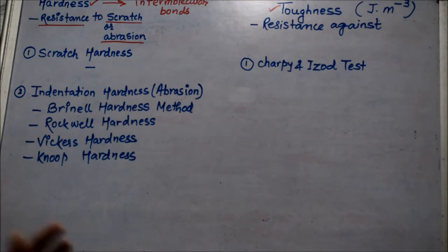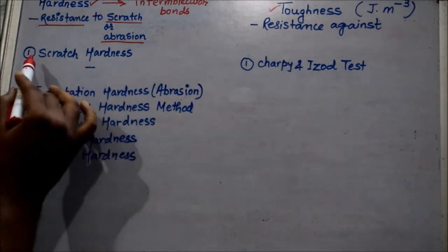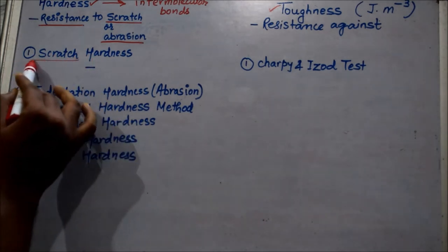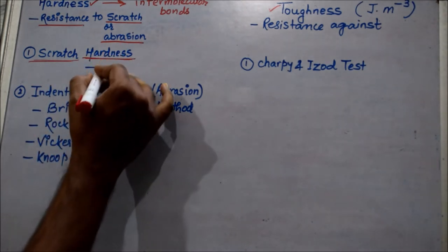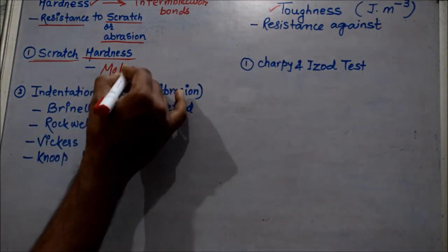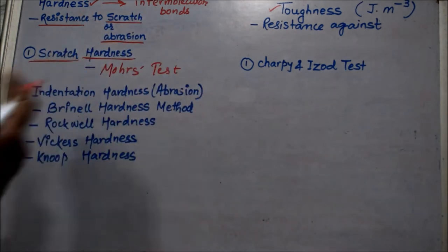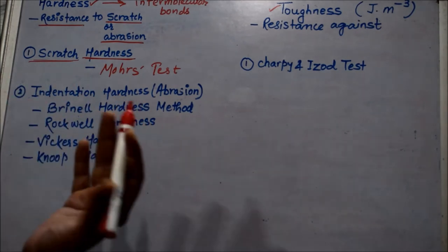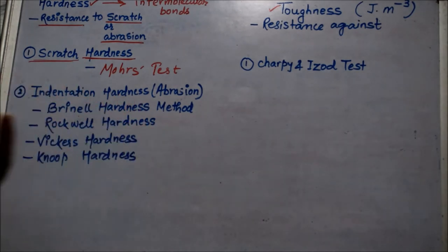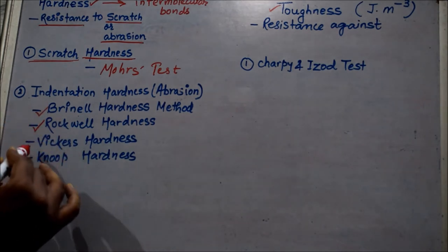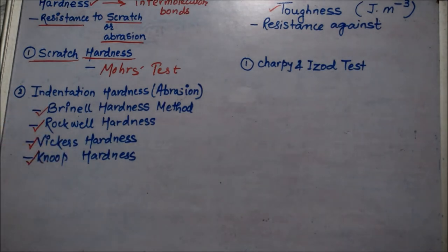But the behavior of solid materials under force is too complex, and that's why there are various types of hardness tests that can be conducted. For example, if I have to conduct a scratch hardness test, I will conduct the famous Morse test. In the same way, for indentation hardness tests we have Brinell test, Rockwell test, Vickers test and Knoop hardness test.